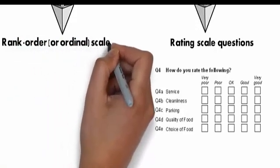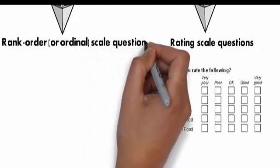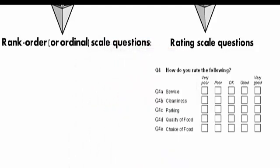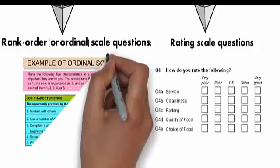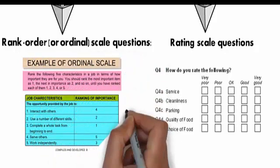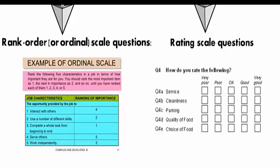Type 5: Rank-order or ordinal-scale questions. This type of question asks your respondent to rank items or choose items in a particular order from a set.